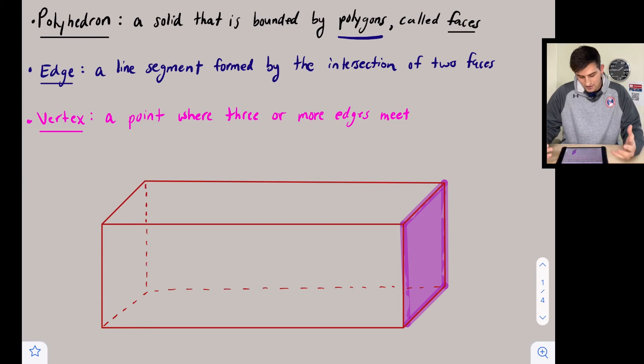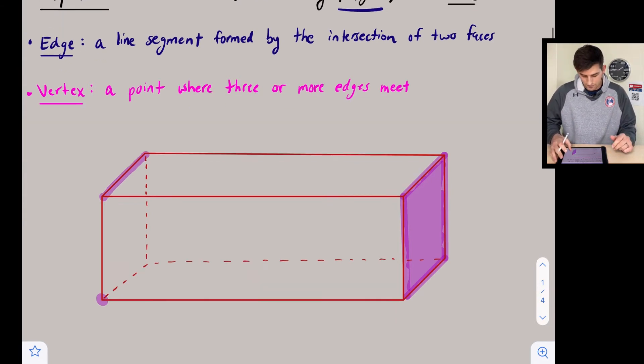Now when we talk about the edge, an edge is a line segment formed by the intersection of two faces. For example, one of the edges would be right there. Lastly, a vertex is a point where three or more edges meet—a vertex would be at that point right there. So there are our three vocabulary words: face, edge, and vertex.